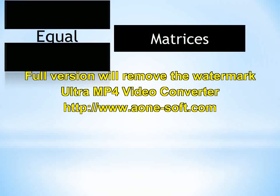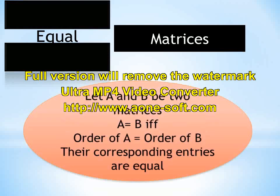The next term we will discuss is equal matrices. Two matrices are said to be equal if they satisfy two conditions. The first condition is that the order of both matrices must be the same — meaning the number of rows and columns in both matrices must be equal. For example, if the order of the first matrix is 2 by 3, then the order of the second matrix must also be 2 by 3.